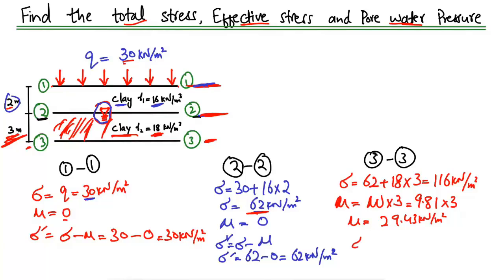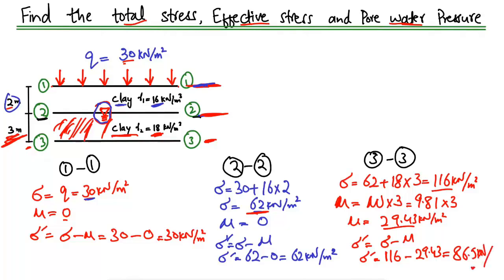The effective stress at point 3.3 equals total stress minus pore water pressure: 116 minus 29.43 gives us 86.57 kilonewton per square meter. That is the effective stress at point 3.3.